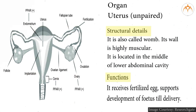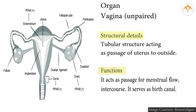Uterus (unpaired), also called the womb. Its wall is highly muscular, and it is located in the middle of the lower abdominal cavity. It receives the fertilized egg and supports development of the fetus till delivery. Vagina (unpaired) is a tubular structure acting as a passage from the uterus to the outside. It acts as a passage for menstrual flow and intercourse, and also serves as the birth canal.